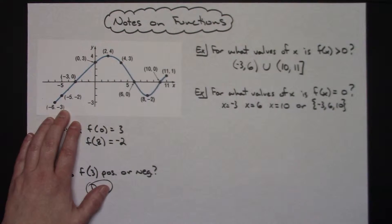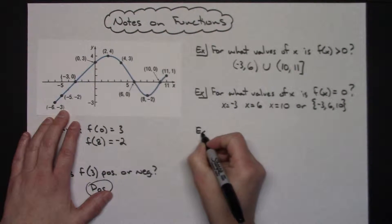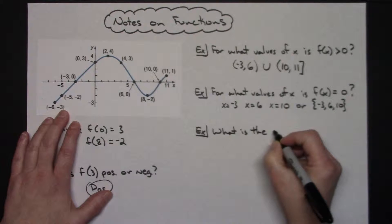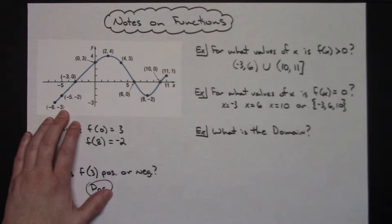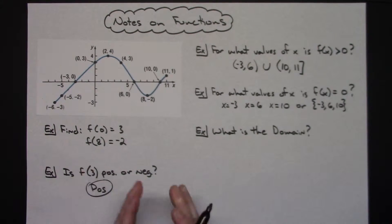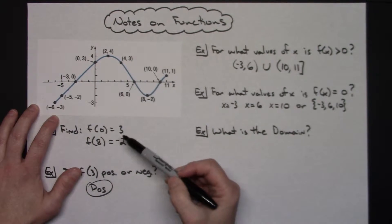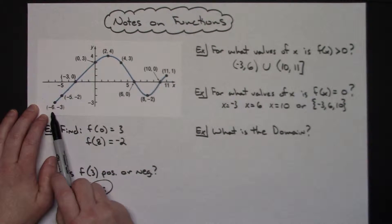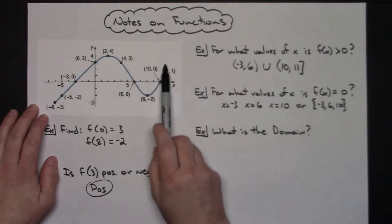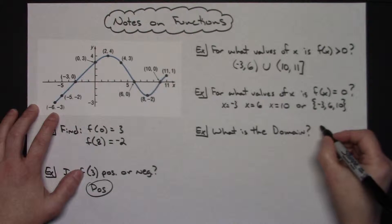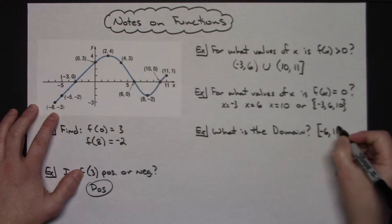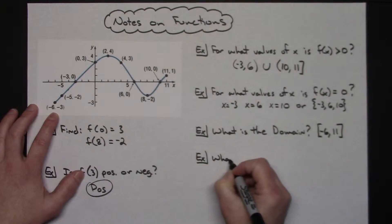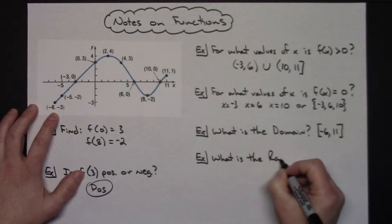Now let's find the domain and range. Domain is all the x values from left to right across the graph. This graph has solid closed dots, so it doesn't go on forever. The farthest left value is negative 6 and the farthest right value is 11. Using closed brackets because those points are included: [negative 6, 11].